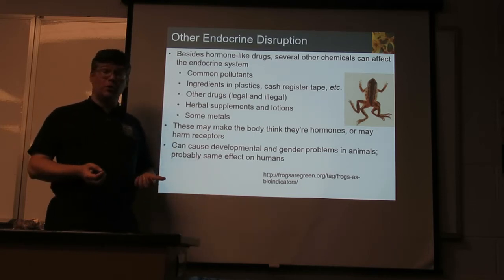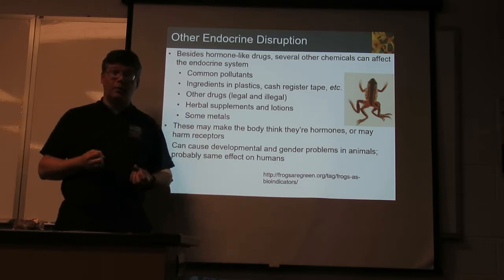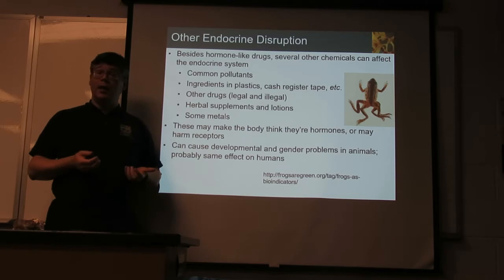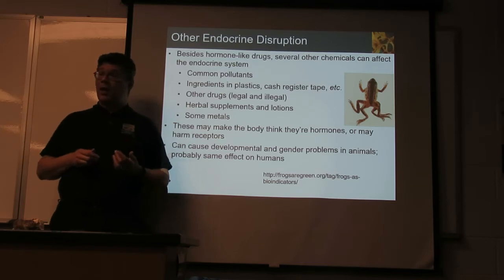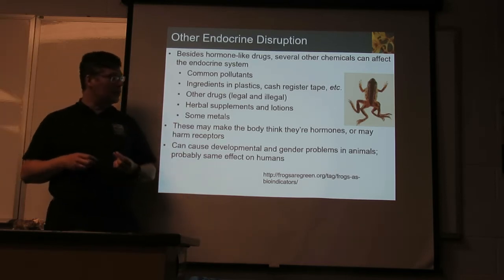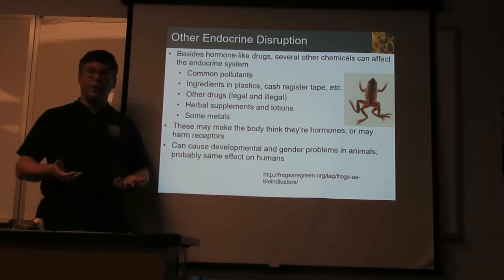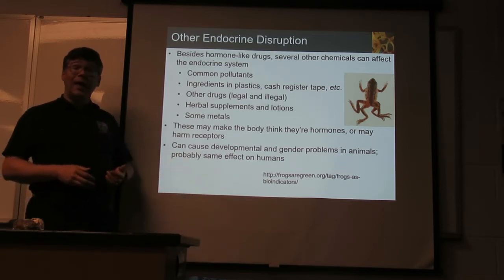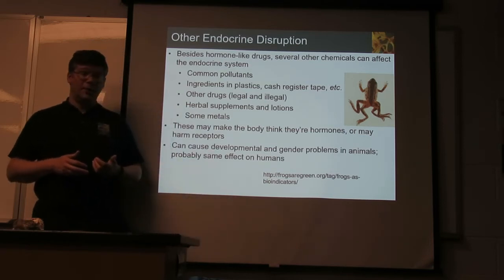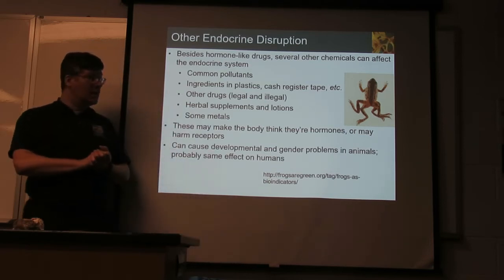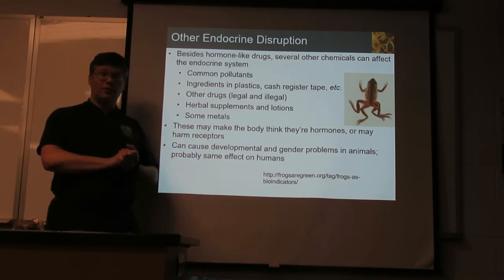Likewise, there are a variety of chemicals affecting sexual development. For example, tributyltin is historically a popular chemical to add to boat paint because things like barnacles do not like it. You paint your boat with this and you don't have to scrape it nearly as much because stuff isn't growing on it. But the tributyltin is getting out into the water and it tends to mess up the reproductive development of animals living there. For example, female snails exposed to tributyltin will grow parts that females aren't supposed to have and will not be able to reproduce properly.